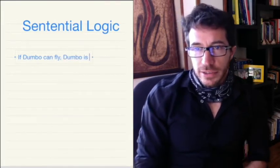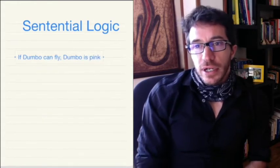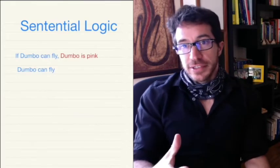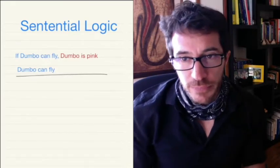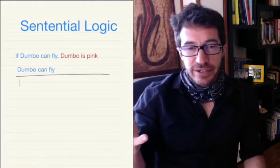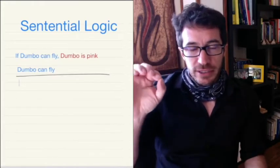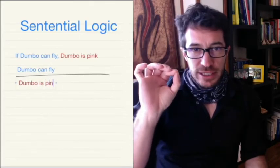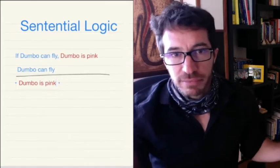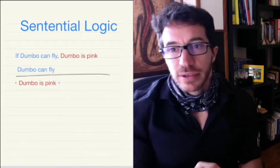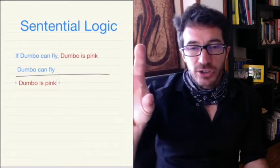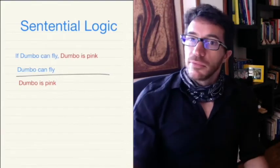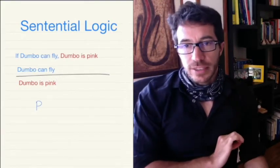That's a weird sentence, but it's a sentence. The second sentence is that Dumbo can fly. So from these two sentences, we can deduce that Dumbo is pink. It doesn't matter if these sentences make sense or not. What we care about here is the logic that we're using. We're going to ignore the content of each particular sentence and look at the logic that's behind it.